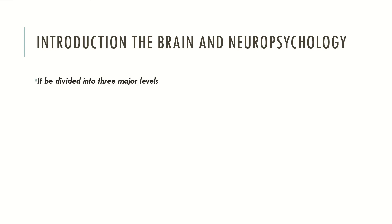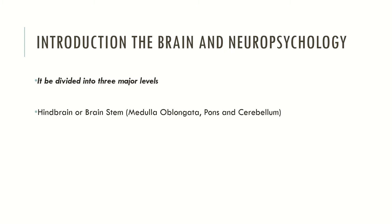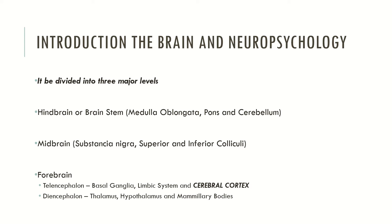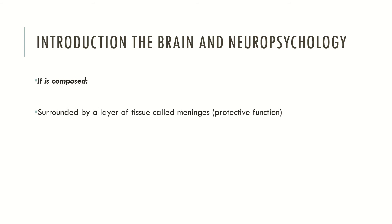The brain is divided into three major levels. Hindbrain or brainstem, which contains the medulla oblongata, the pons and cerebellum. Midbrain, which contains the substantia nigra and the superior and inferior colliculi. And the forebrain, which contains the telencephalon, composed by the basal ganglia, limbic system and the cerebral cortex. And the diencephalon, which contains the thalamus, hypothalamus and mammillary bodies. The brain is also composed by several layers of tissues called meninges, some of which are very important in protecting the brain if some major traumatic event occurs. The brain also has a complex vascular system which takes blood to the brain, providing the necessary nutrients that nerve cells need to function.